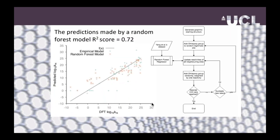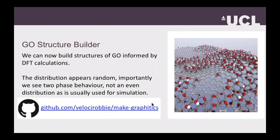Here's our fit. It's not amazing, but I'll show you why we think it's good enough. We take this trained random forest regressor and then iterate through time, iteratively adding functional groups and seeing how the structure evolves. For anyone interested, this is all on GitHub and freely available, and I'd be happy to talk about it with anyone.